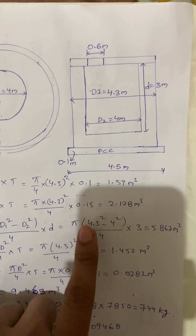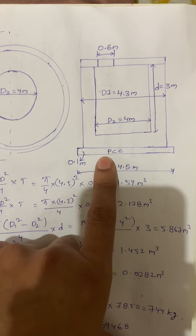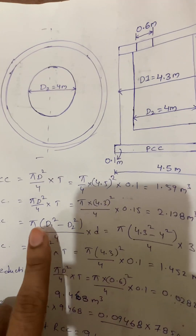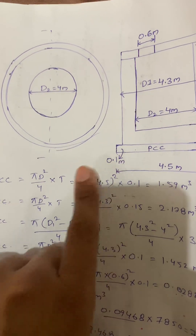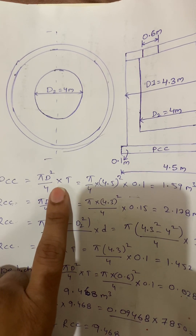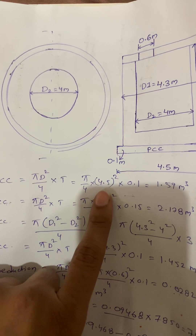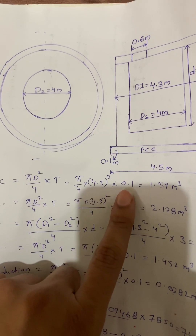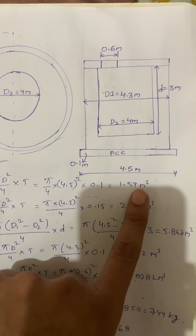First I am calculating quantity for the PCC — plain cement concrete. For the circular PCC, the formula is π D² / 4 × thickness. So π/4 × (4.5)² × 0.1 meters. I got 1.59 meter cube.